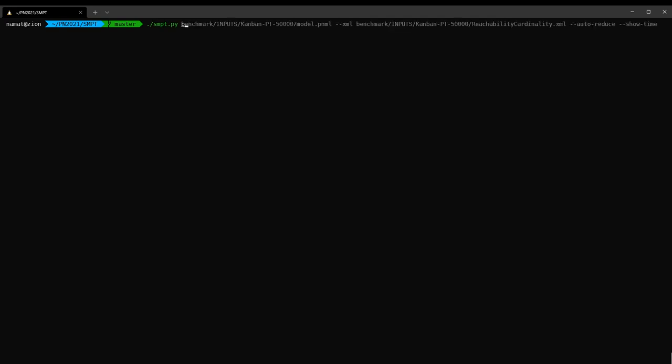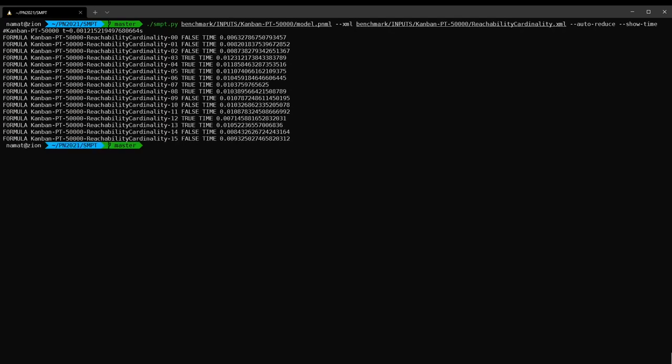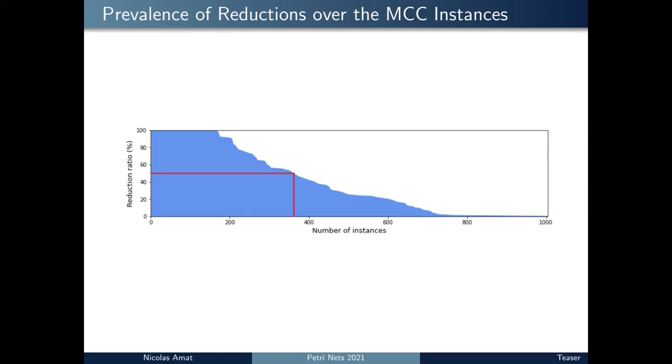We can compute some properties on the Kanban 5000 model from the model checking contest using reductions. In this paper, you will also find some complete experimental results. We took all the instances from the model checking contest, and we found a lot of opportunities of reductions.